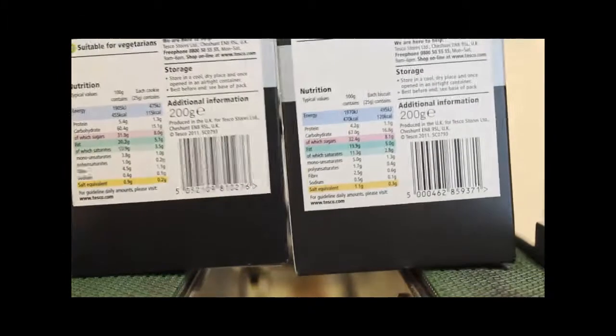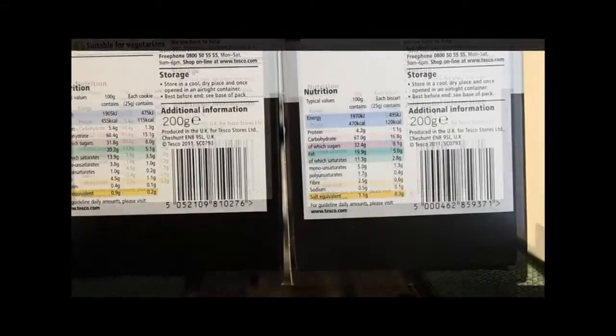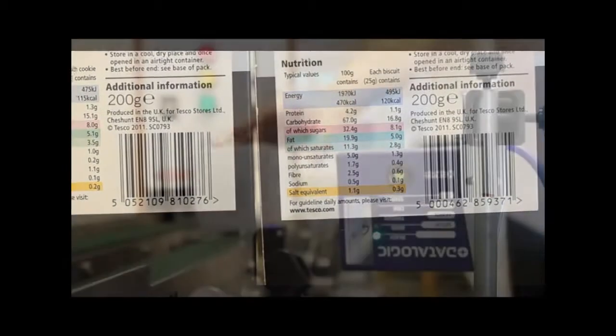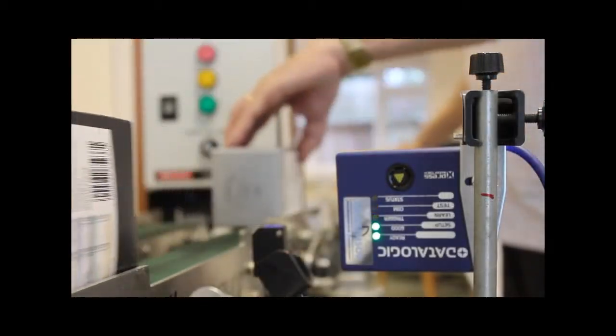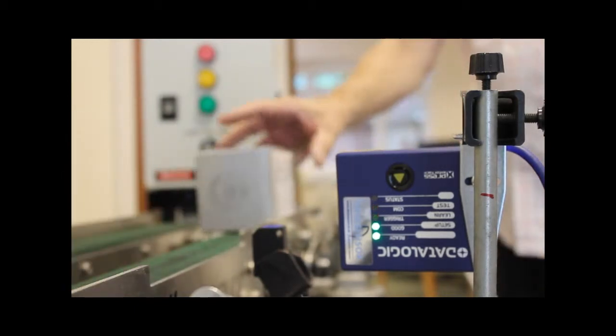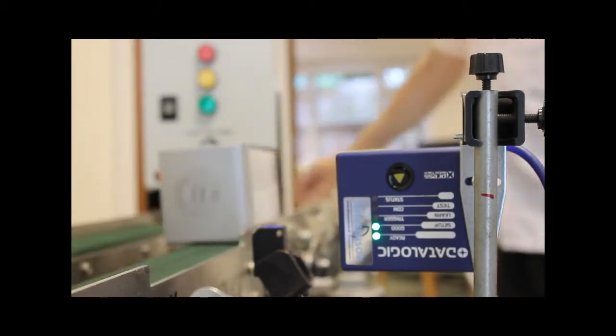For this example we're going to use these two products. As you can see they look very similar but in fact have two different barcode numbers. Allergens are particularly sensitive areas nowadays, so if the product packaging is incorrect there can be severe consequences.